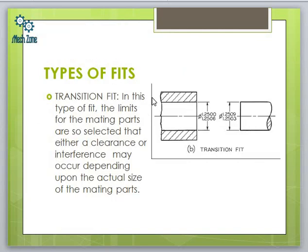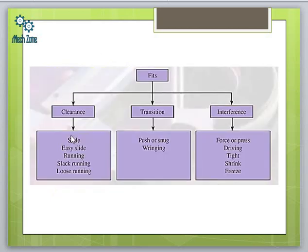Transition fit refers to overlapping of the tolerance zones, resulting in partial clearance and partial interference — it lies between the clearance fit and interference fit. Clearance fit is used for slide, easy slide, running, slack running, and loose running applications. Transition fit is used for push, snug, and ringing fits. Interference fit is used for force/press, driving, tight shrink, and freeze fits.